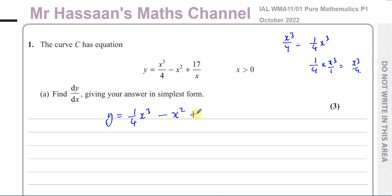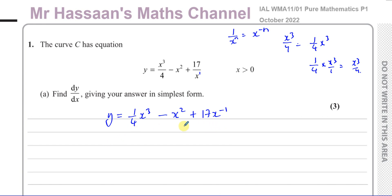Then I've got minus x squared — that's fine. And 17 over x: you need to write the x in the numerator. By the laws of indices, 1 over x is the same as x to the power of minus 1. If it's 1 over x to the power of n, it's x to the power of minus n. So 17 over x to the power of 1 becomes 17 times x to the power of minus 1. We haven't started to differentiate yet — this is just getting it ready to differentiate.